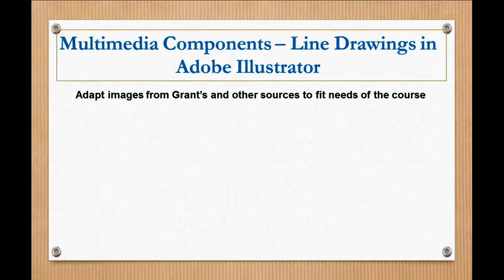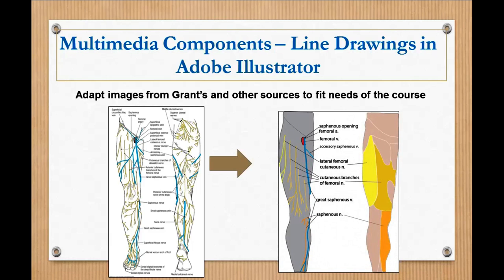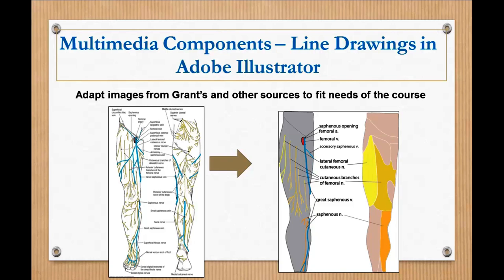We created some line drawings with Adobe Illustrator, adapted them from Grant's or other sources to fit the needs of our curriculum. Here on the left you can see an image from Grant's. It's all the cutaneous innervation and cutaneous veins. You can see it's a pretty busy diagram. A lot going on. And it can be kind of hard to follow. Plus there are structures on there that are not relevant to the PTs. So I adapted that for the anterior thigh compartment lab and just focused on the cutaneous nerves that they needed to look at. So kind of took that base image, drew, and created our own diagram.